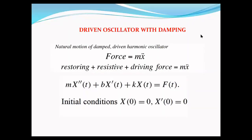Now coming to the driven oscillator with damping. In all cases, force equals mass times acceleration. Here we have three forces: restoring, resistive, and driving force. The restoring force is −kx(t), acting opposite to the driving force, and the resistive force is b·dx/dt, also opposite to the driving force. Rearranging, the equation is m d²x/dt² + b dx/dt + kx(t) = f(t), where f(t) is the driving force.